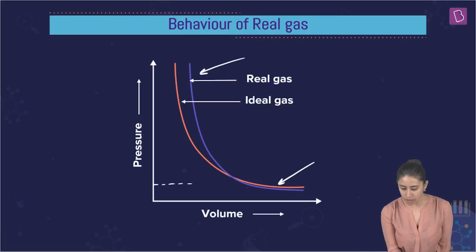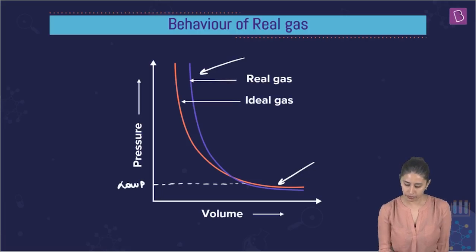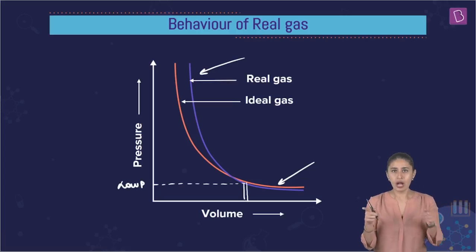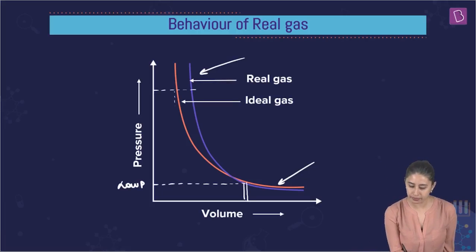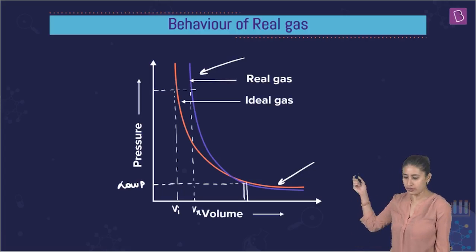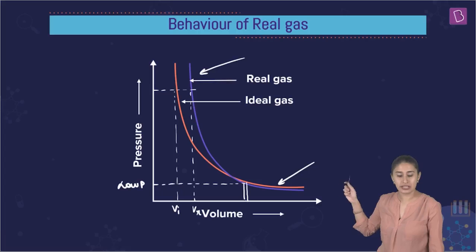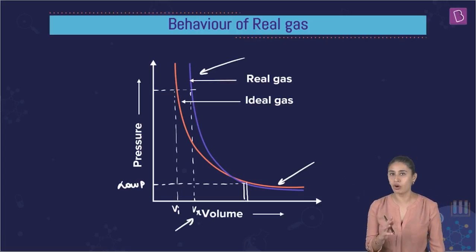At lower pressures, you can observe that the volume at a particular low pressure for real gas and ideal gas are approaching each other. Whereas when we're talking about higher pressures, the volume of the ideal gas and the volume of the real gas are not approaching each other. At very high pressures, the real volume is greater than volume of the ideal gas.